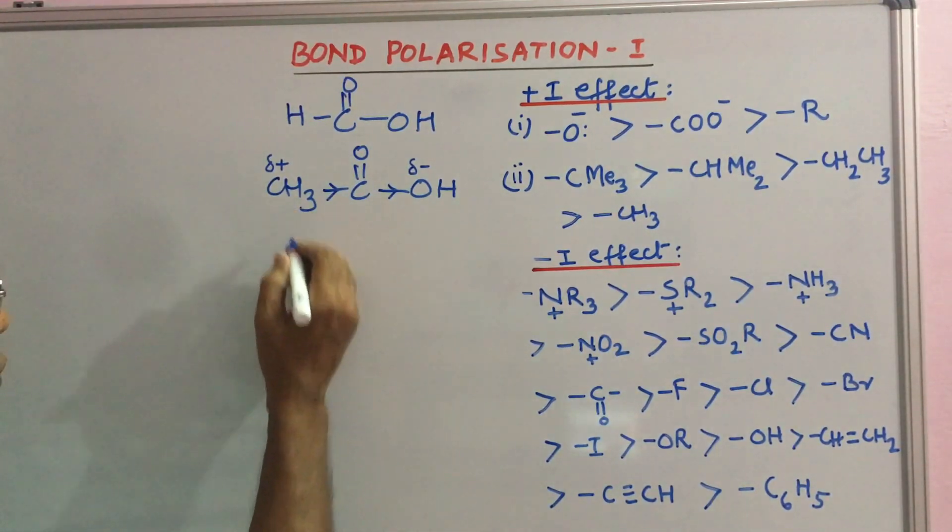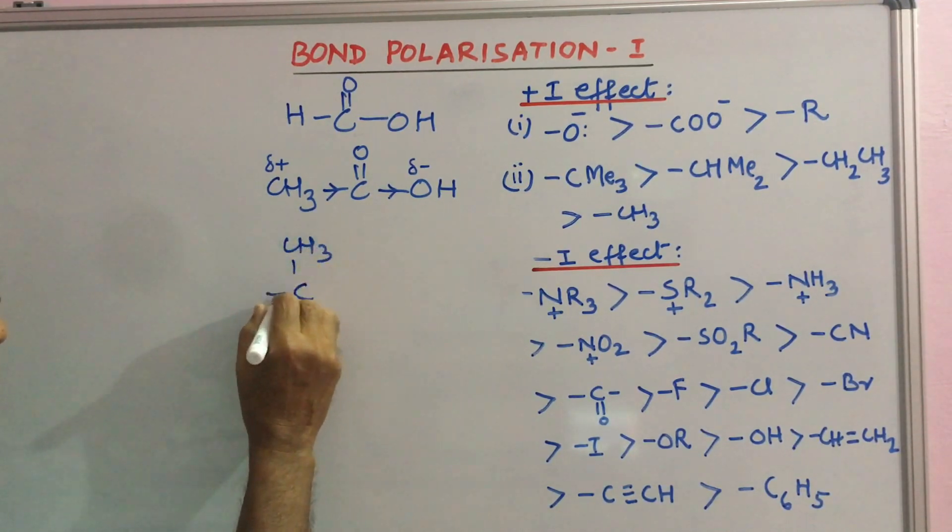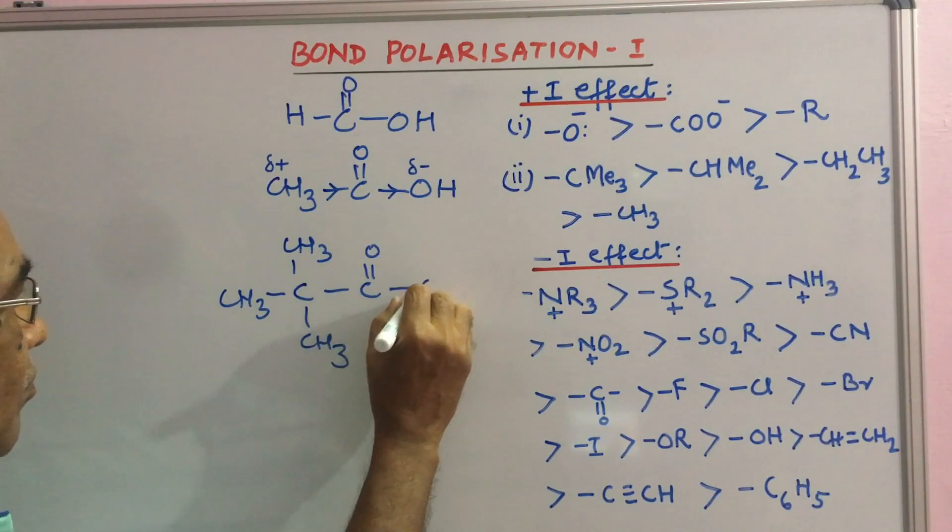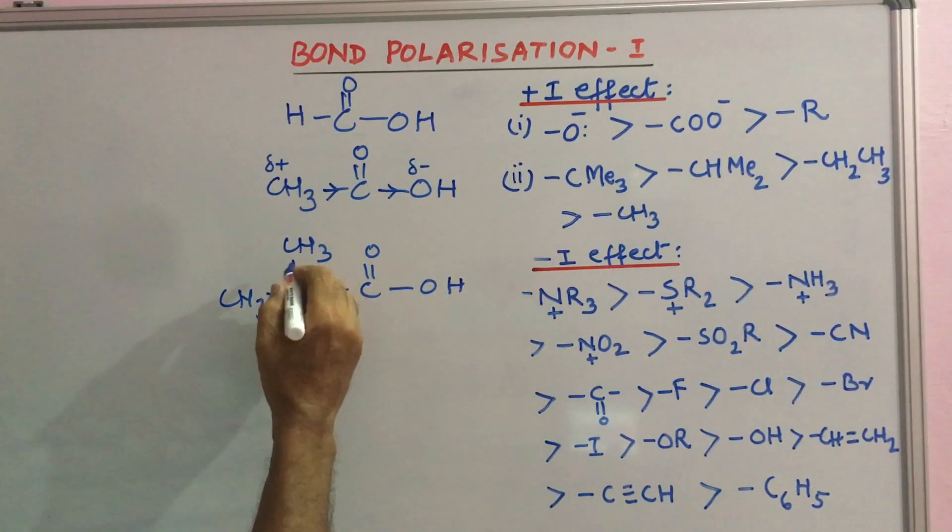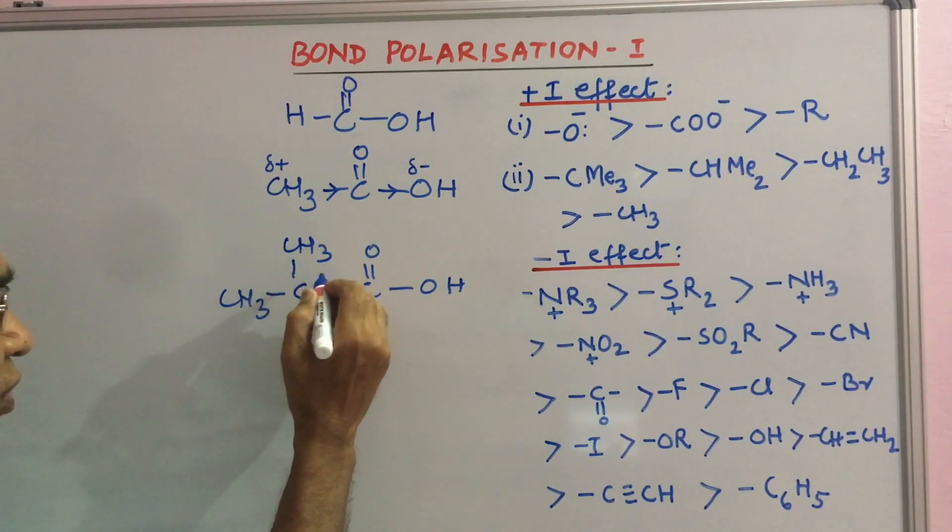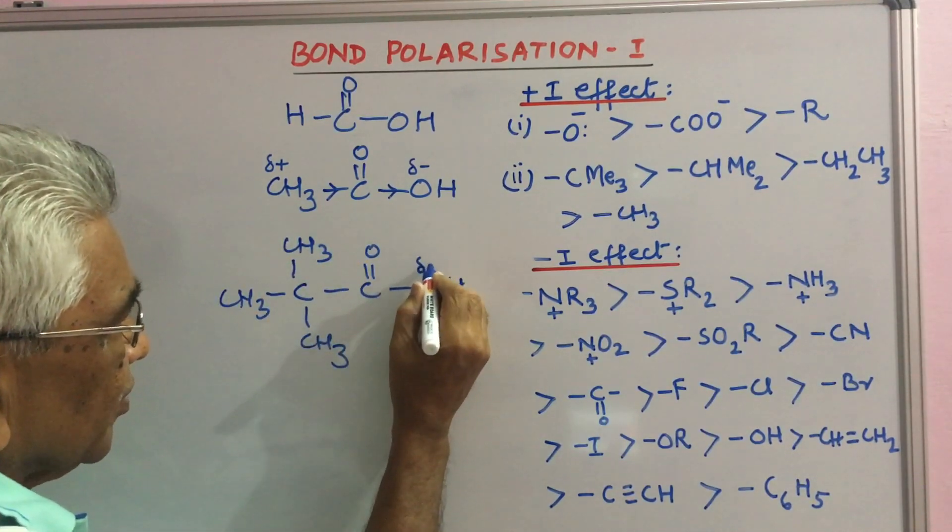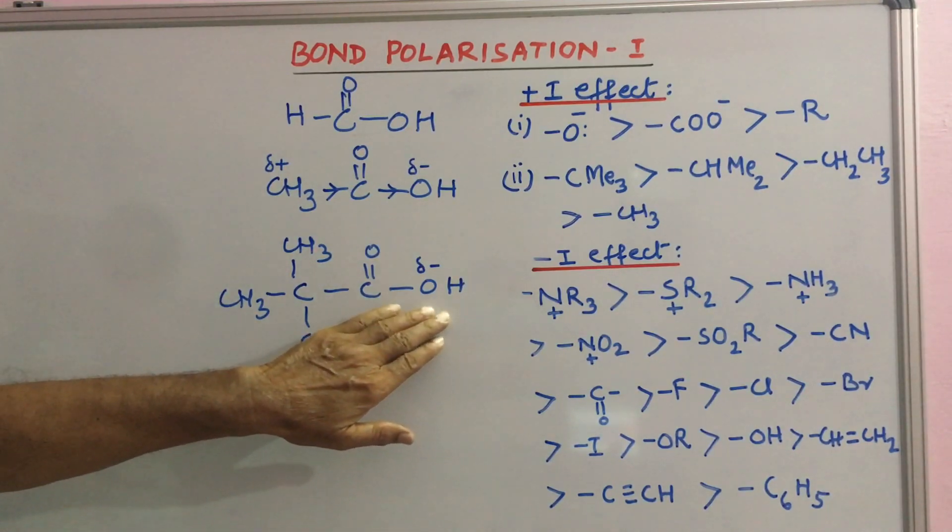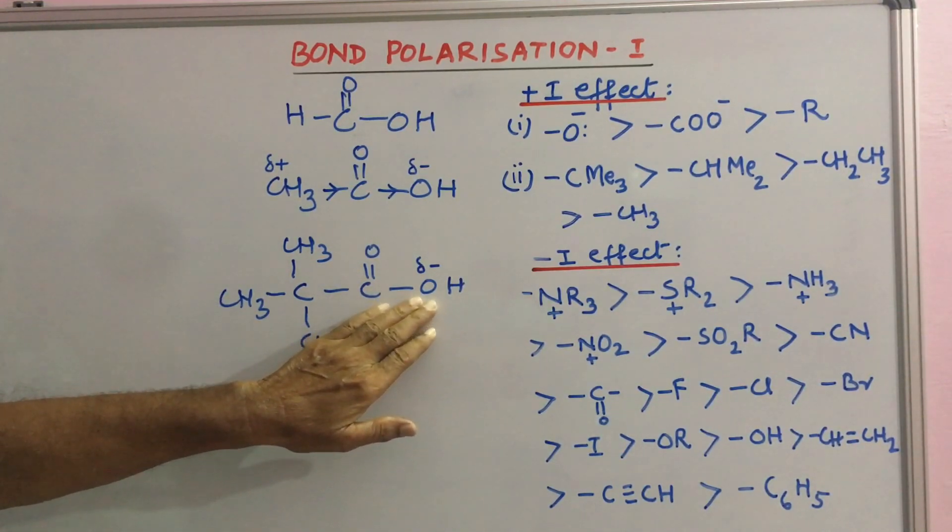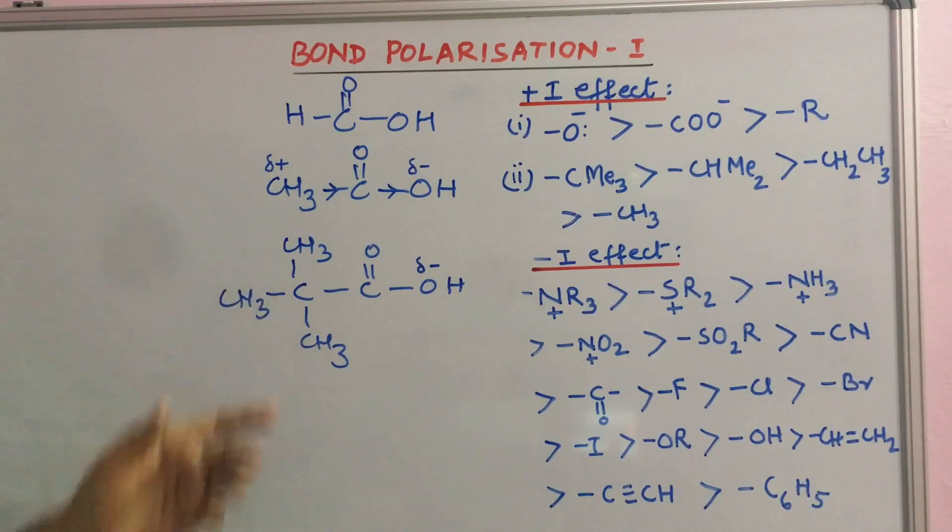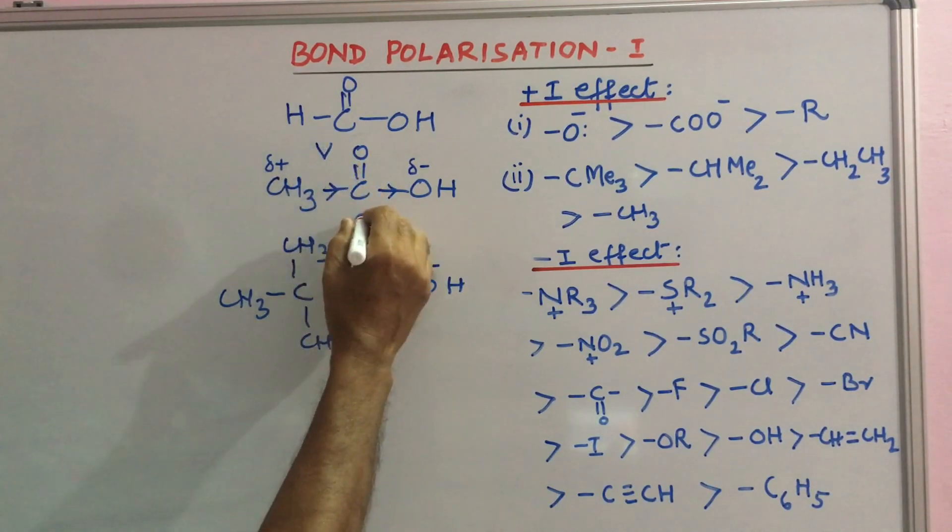If you put more, say three methyl groups here, a very strong delta plus charge is developed here, and an equal delta minus charge at this place. This delta minus being very strong will not further allow having these two electrons which is a burden on this oxygen atom. So this acid is still a weaker acid. This is the strongest of these.